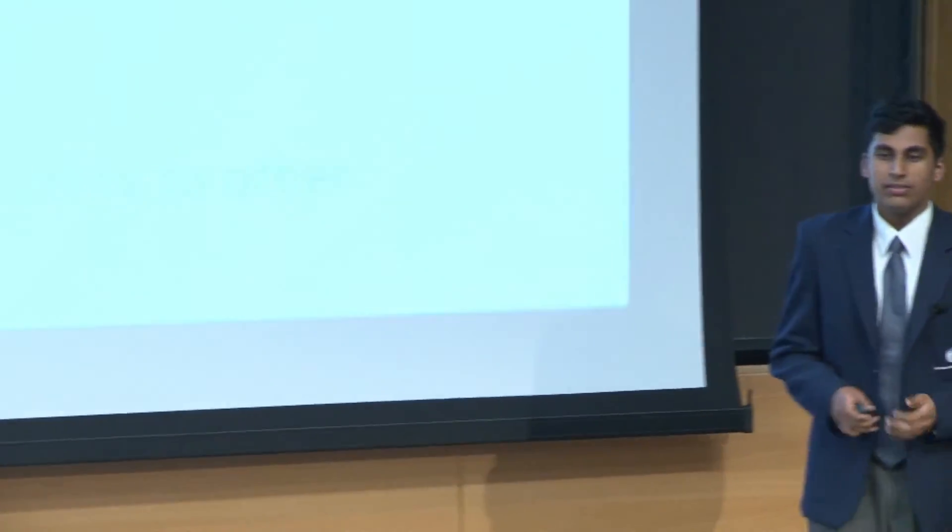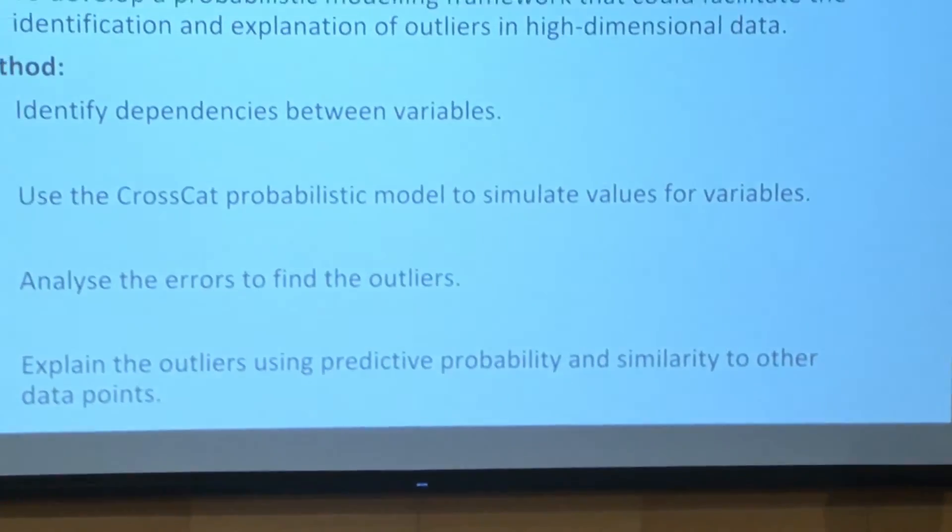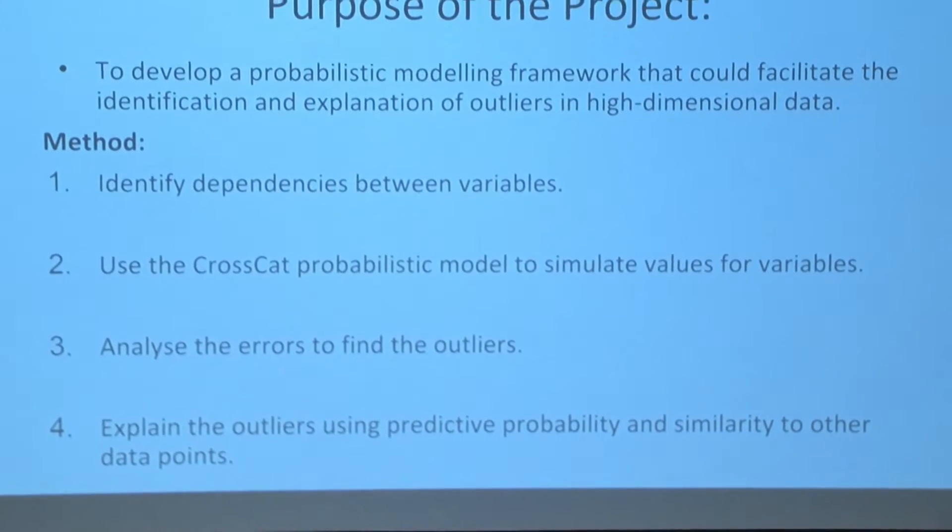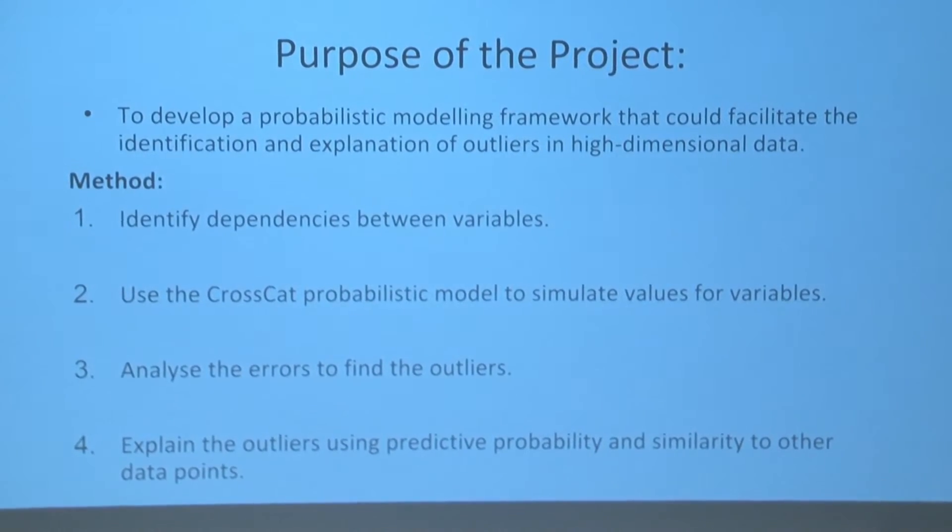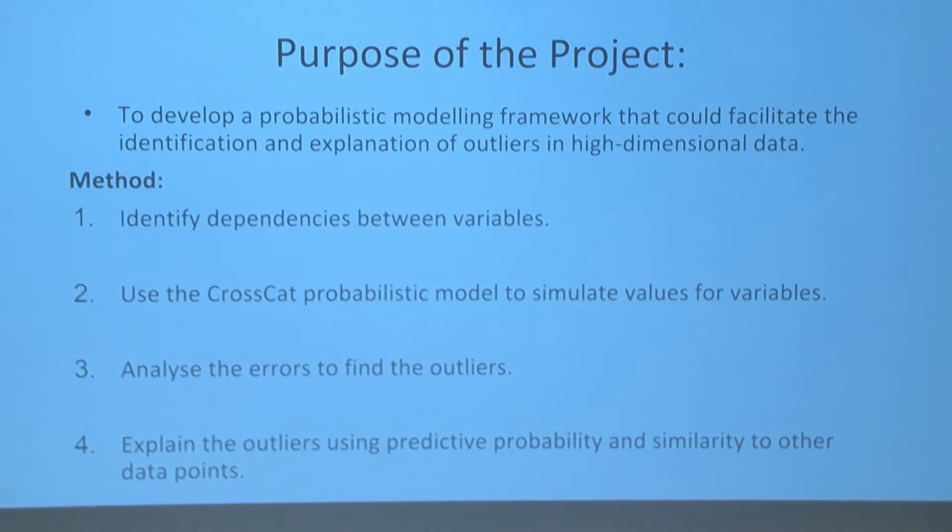So what was the purpose of my project? I attempted to find a probabilistic modeling framework in order to identify and explain these outliers in this high-dimensional data, or data with lots and lots and lots of features. How did I do that? Well, first, I identified the dependencies between the variables. The second thing I did was I used a probabilistic model developed at the MIT CSAIL called CrossCast in order to simulate different values under a probabilistic model for those variables. Then, I analyzed errors to find the outliers. And finally, I explained those outliers using predictive probability.